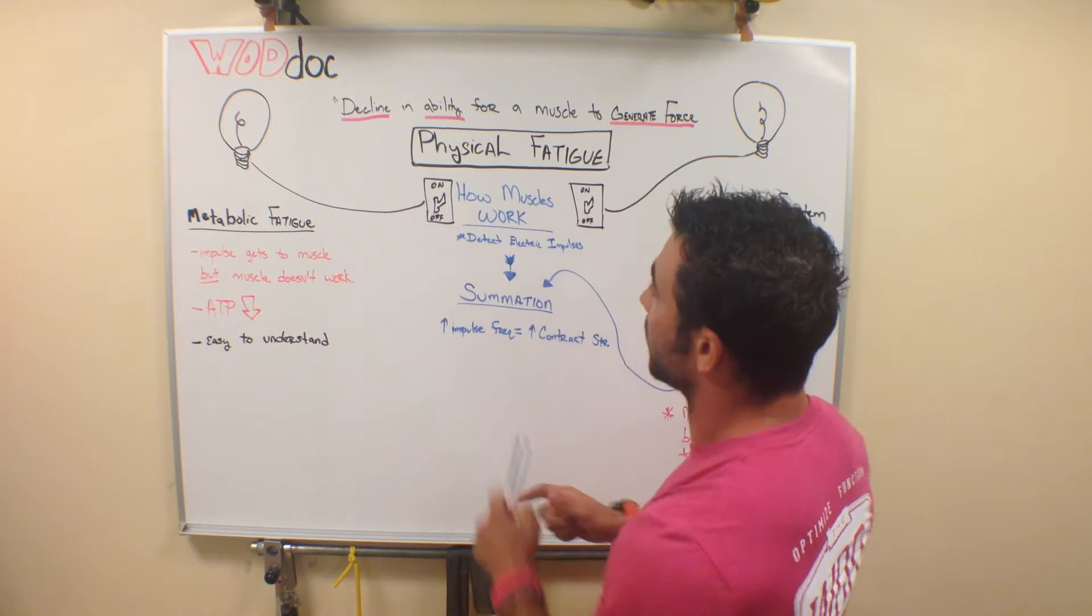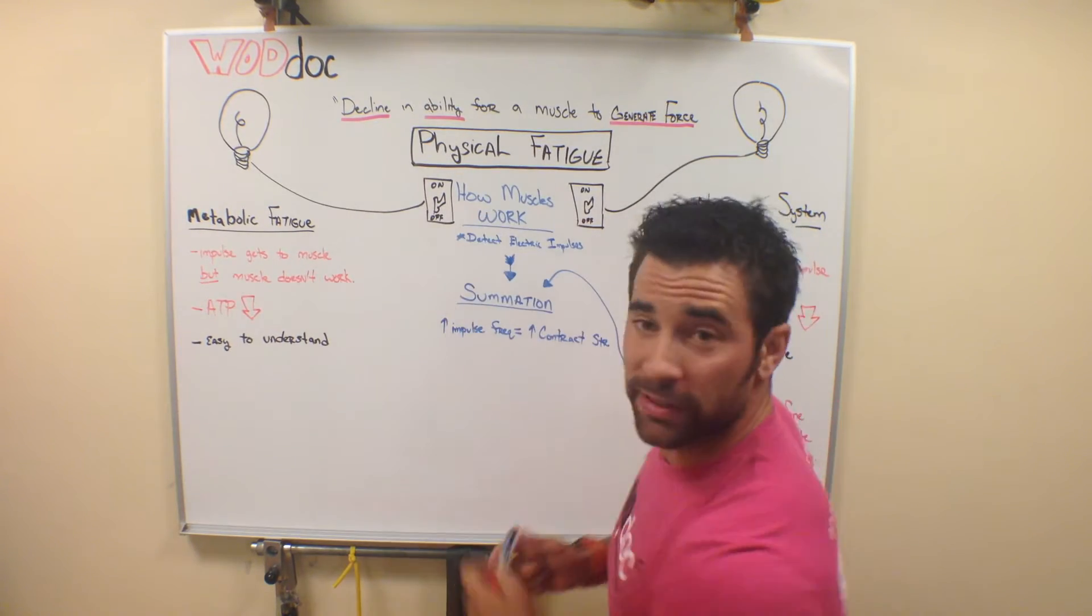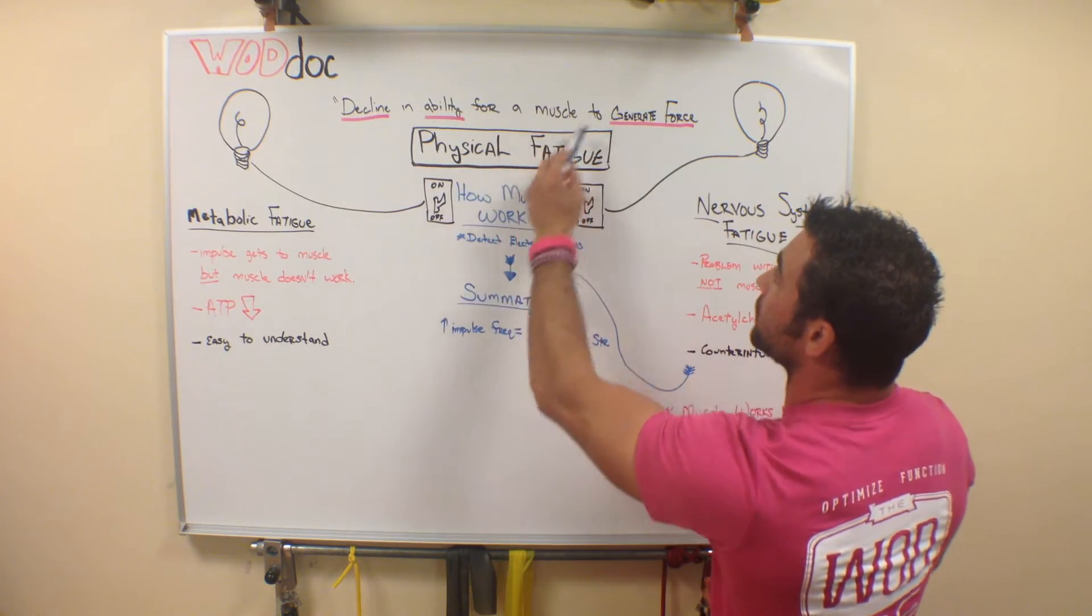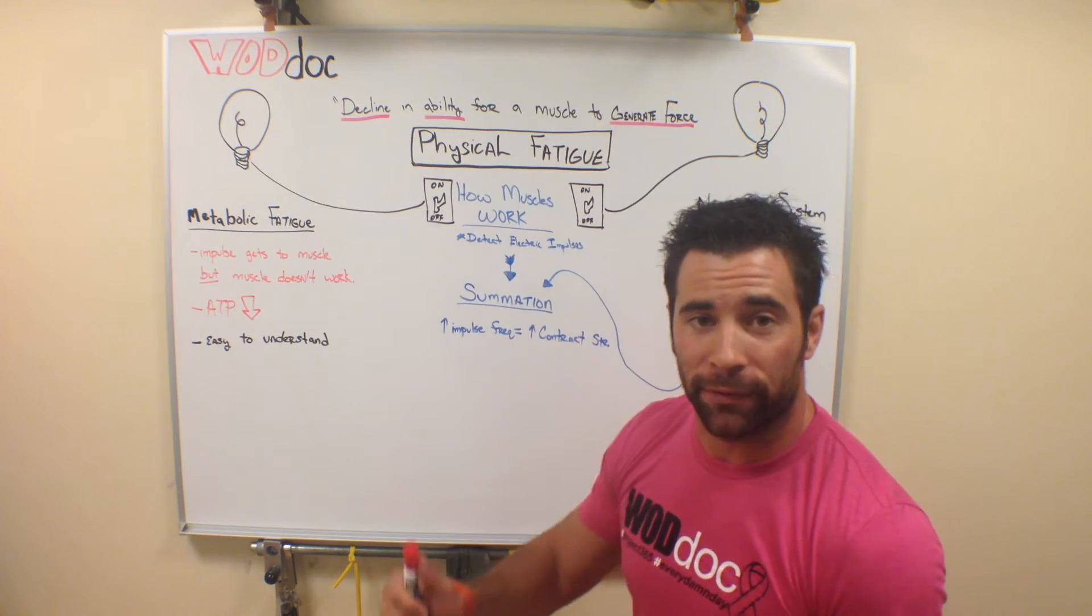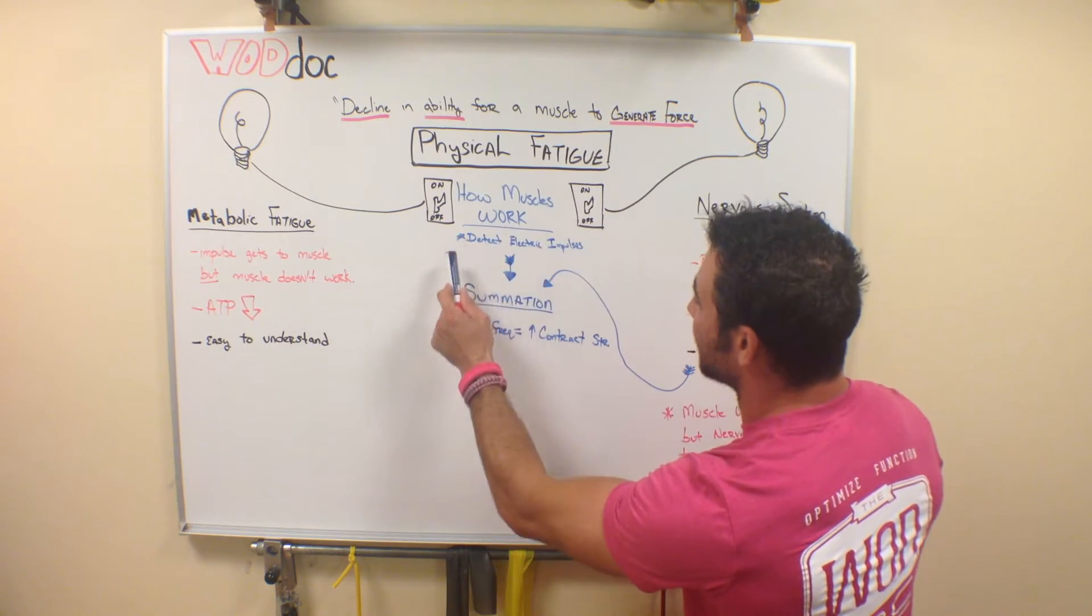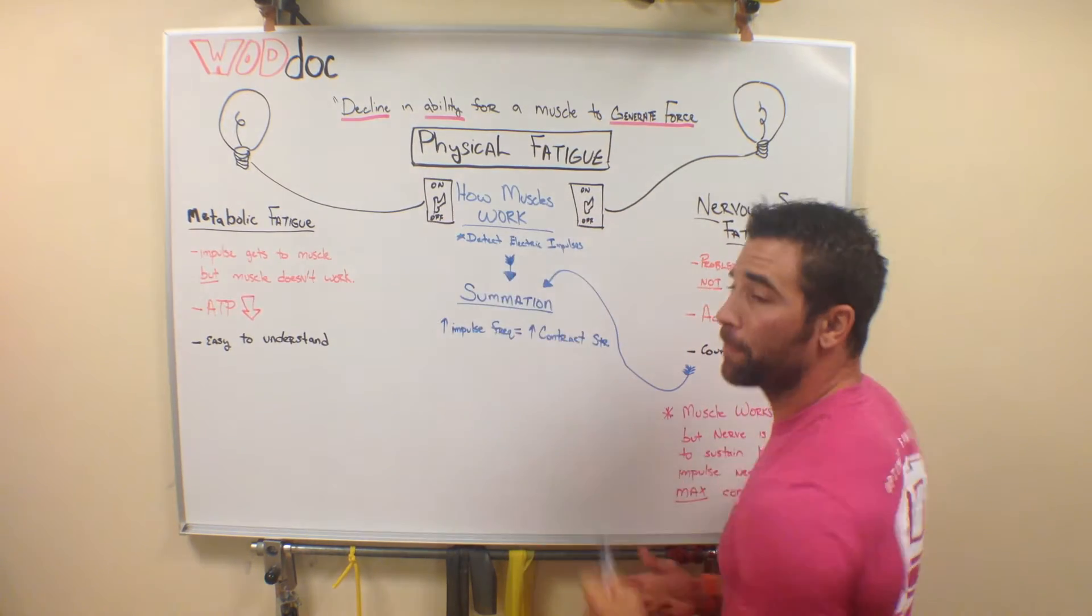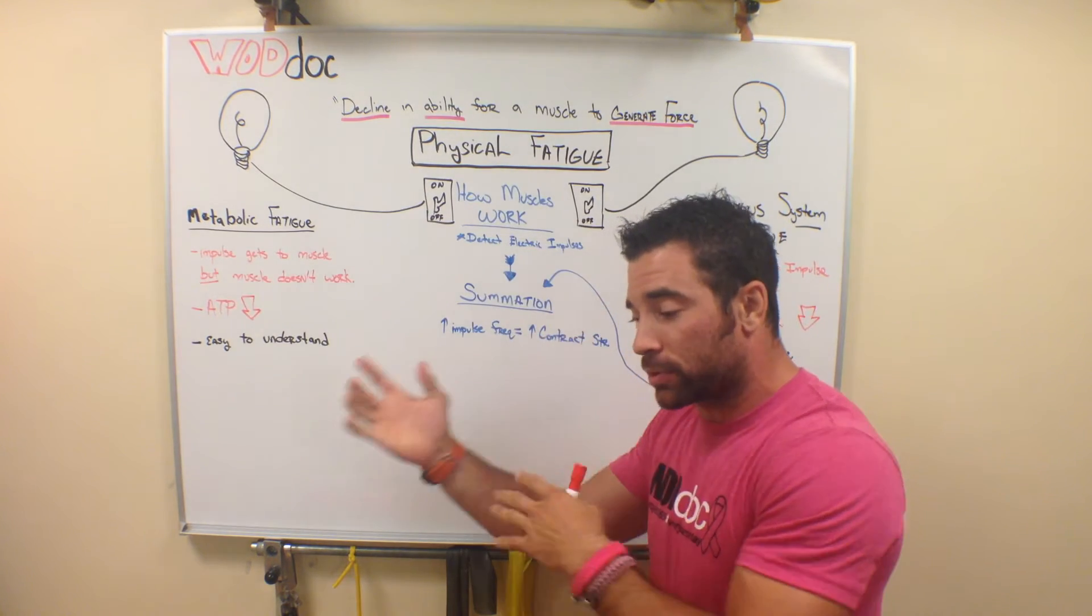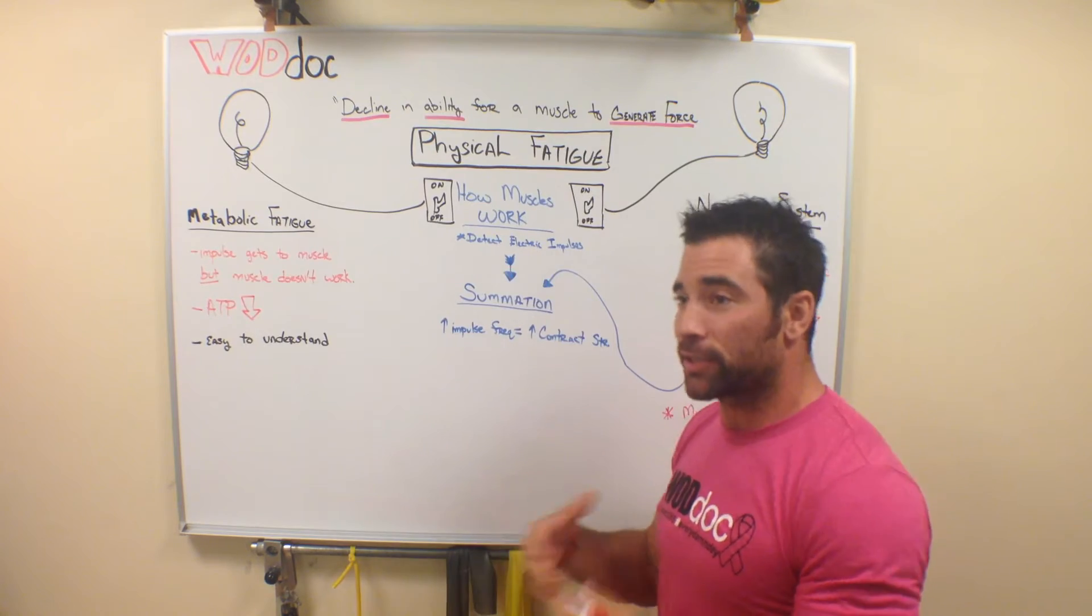So to understand this, let's first talk about what is physical fatigue. Physical fatigue is the decline in the ability for muscle to generate force. So how do muscles work? Well, they detect electrical impulses. Your brain sends down an electrical impulse to your muscle and tells it to contract.